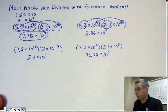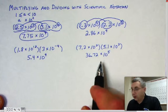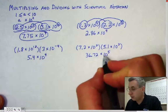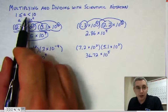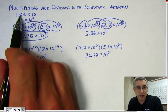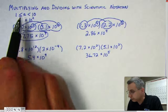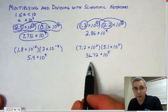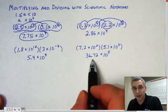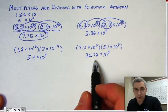At first you might think you're done — 36.72 times 10 to the fifth. But you're not. Remember I said the number that comes in front of the times 10 has to be between 1 and 10, and it has to be less than 10. Right now we have 36.72, which is obviously larger than 10. That's a problem — this is not proper scientific notation, so you need to adjust it.